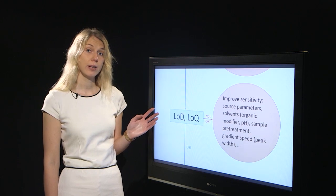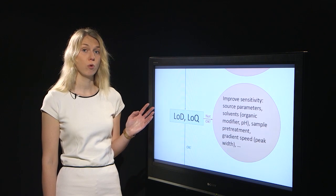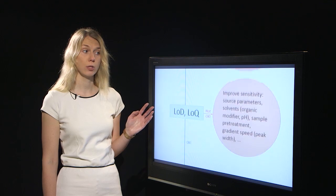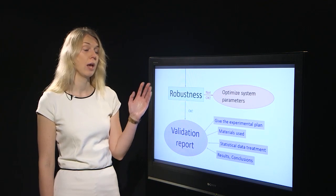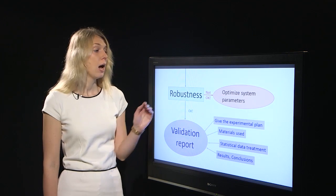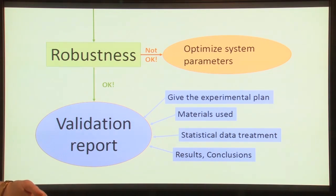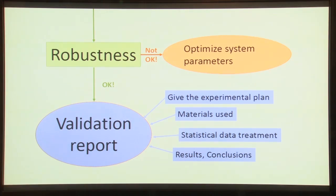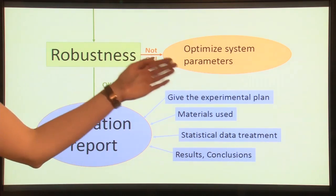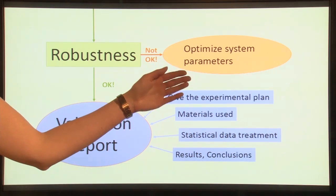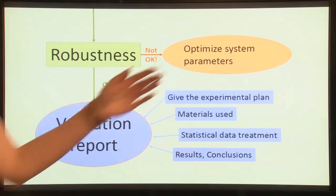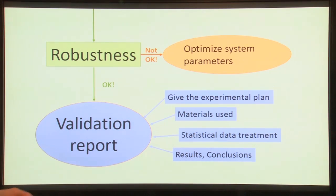However, if LOD and LOQ are acceptable we can move on to the last parameter of validation: robustness. If robustness is not acceptable you should try to find out which parameter causes this inacceptability and try to make modifications for that parameter. And if you have made modifications to your method, then again you need to start the validation from the beginning.